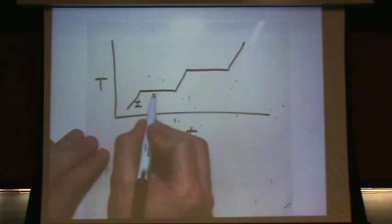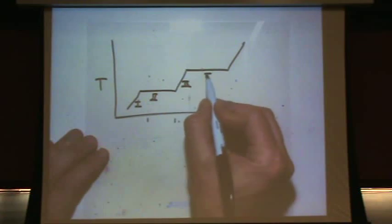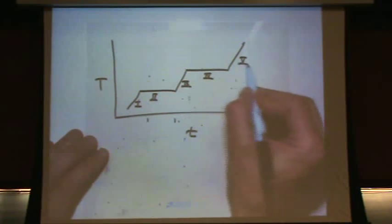For the heating curve, they all look pretty similar. On this label, one, two, Roman numerals here, three, four, and five.